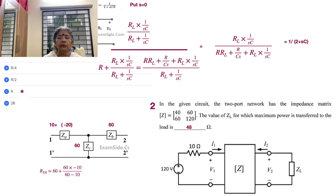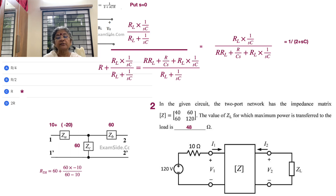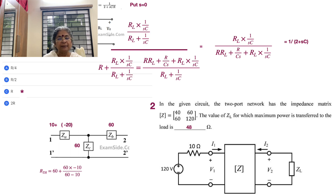In the given circuit the two-port network has the impedance matrix Z: Z11 = 40, Z12 = 60, Z21 = 60, Z22 = 120. The value of ZL for which maximum power is transferred to the load is what we need. For maximum power transfer, ZL should equal the Thevenin impedance RTH seen at the output port, so we need to find RTH.